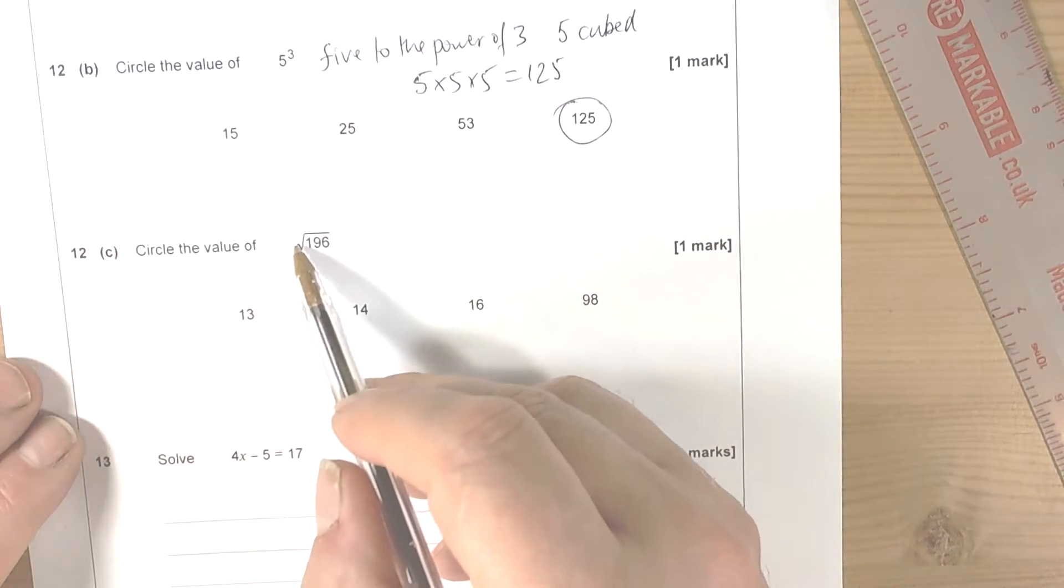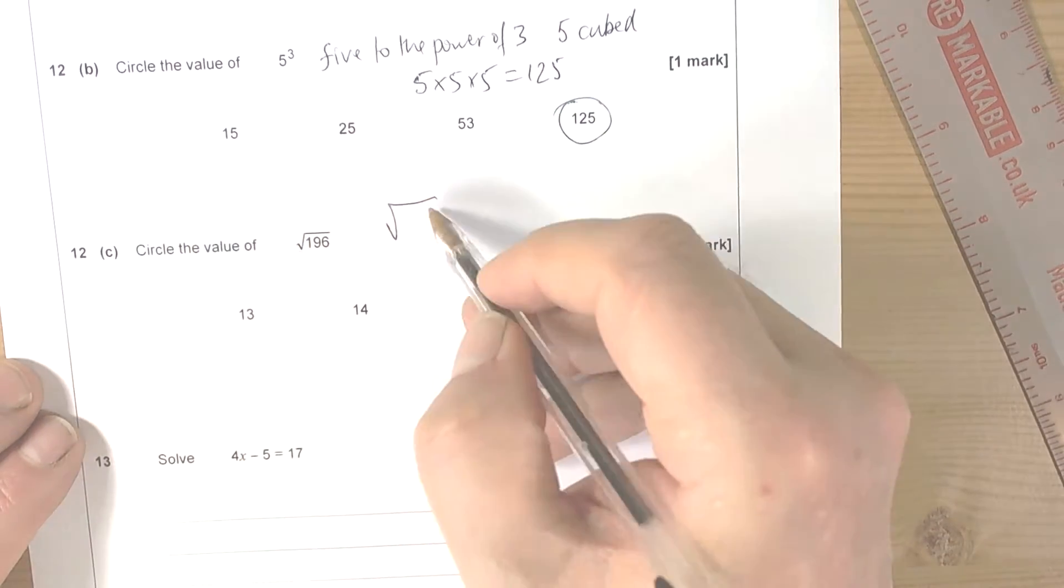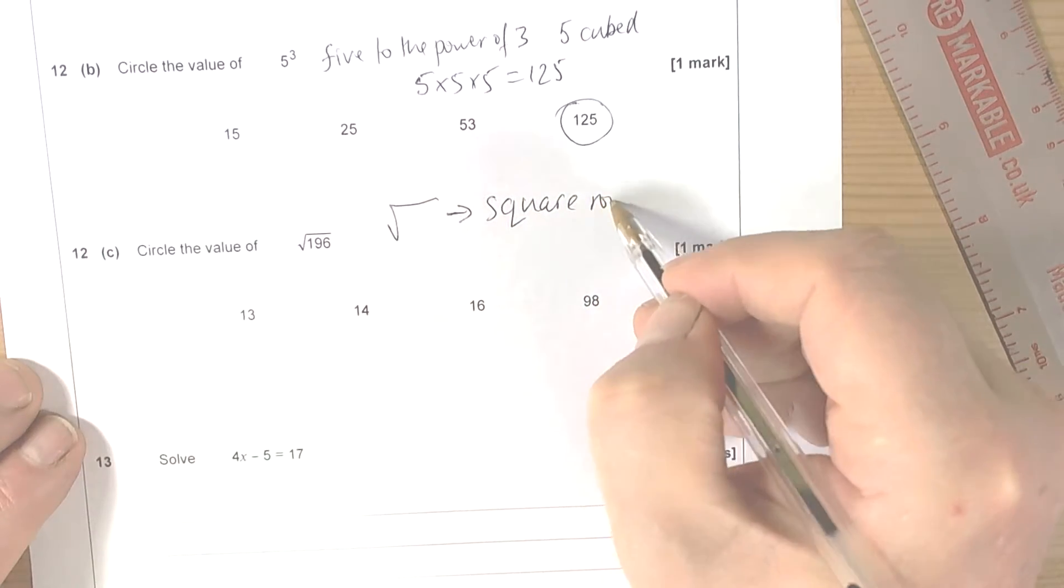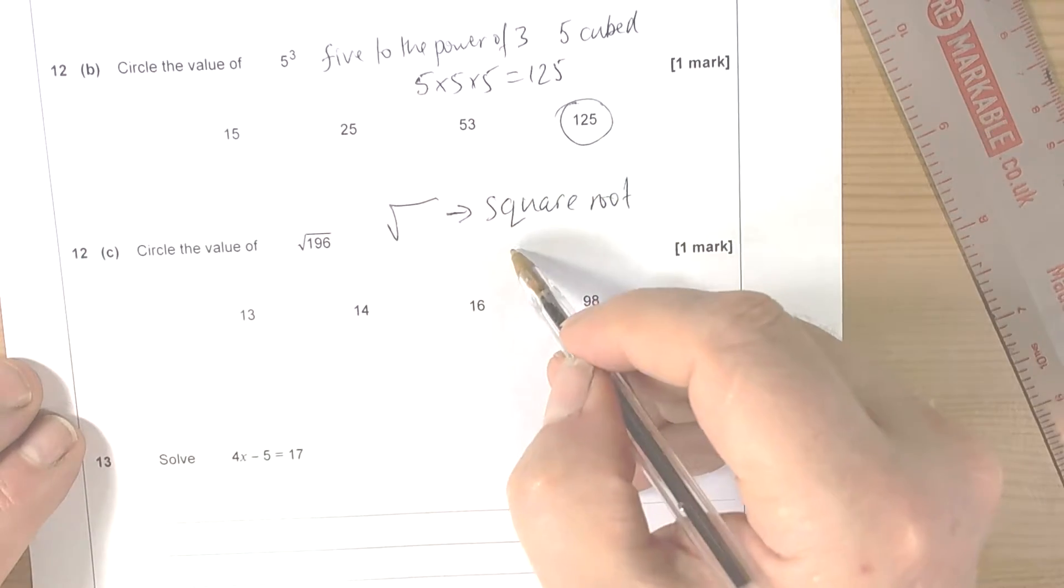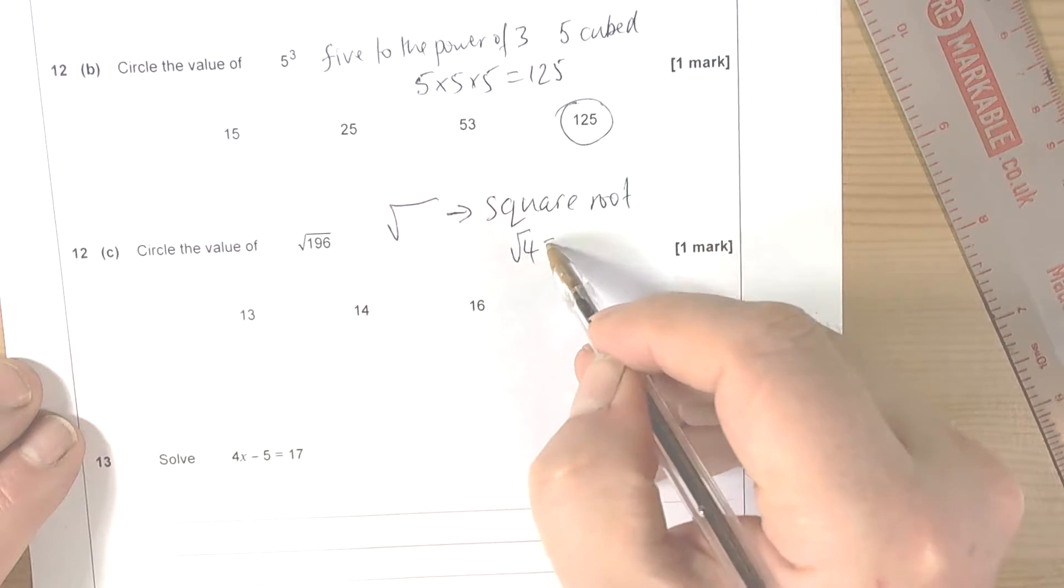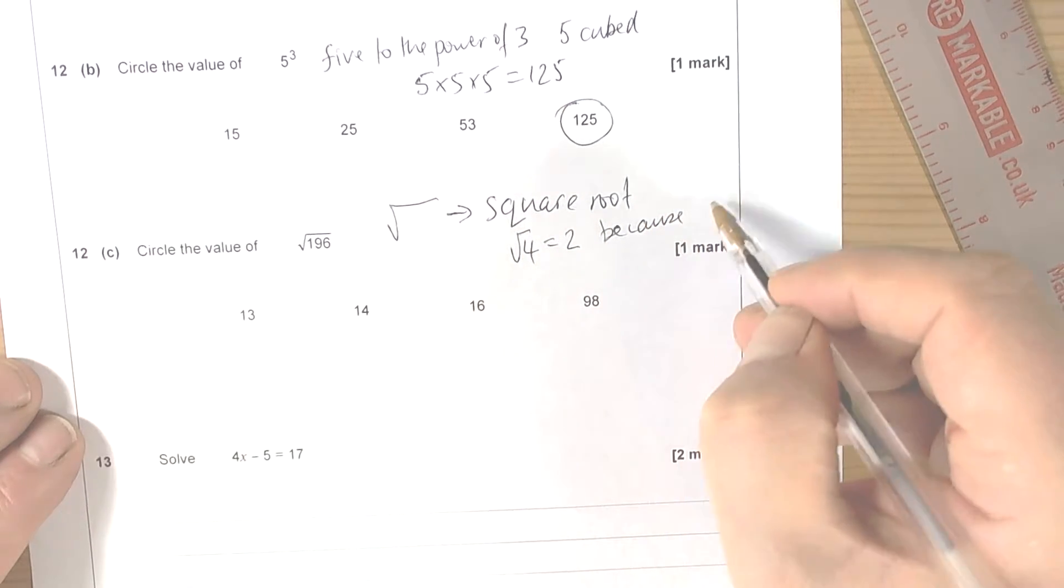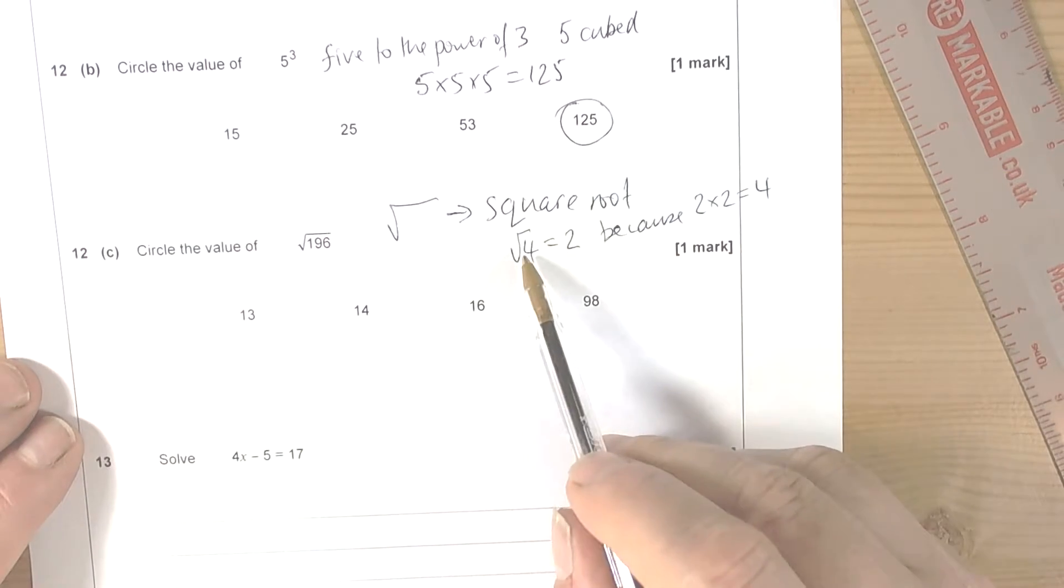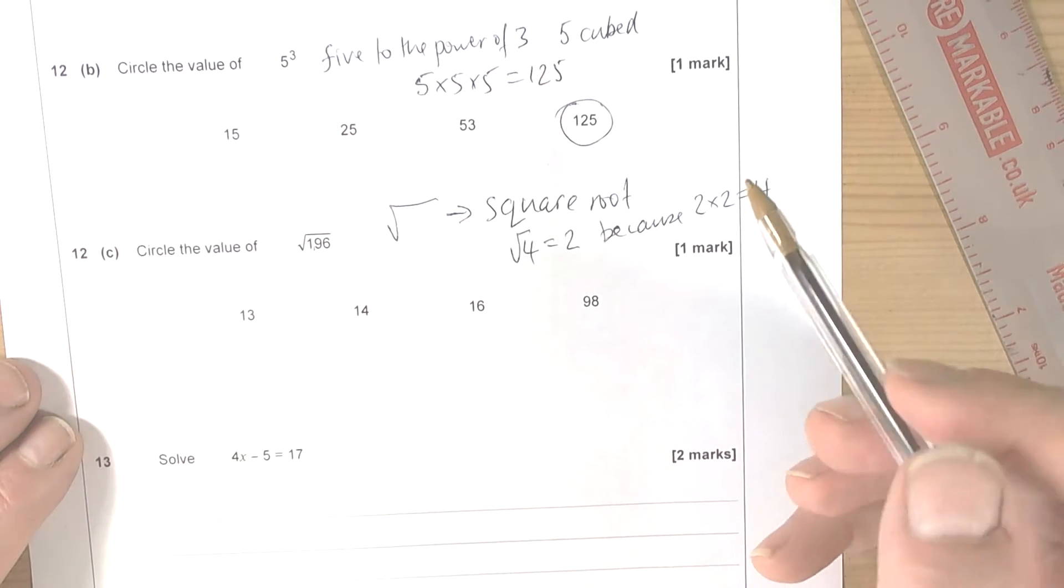This question then has this symbol, and what we've got to realize is that this symbol means the square root. And the simplest way of remembering what the square root means is to think of a simple example: the square root of 4 is 2, because 2 times 2 equals 4. So we're looking for a number that multiplies by itself to give us 196.